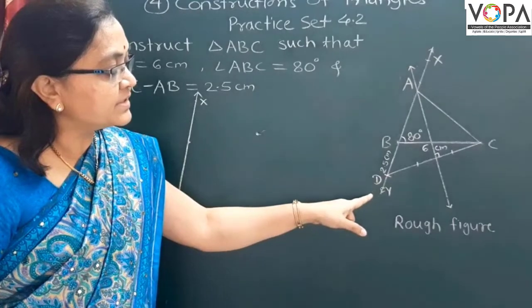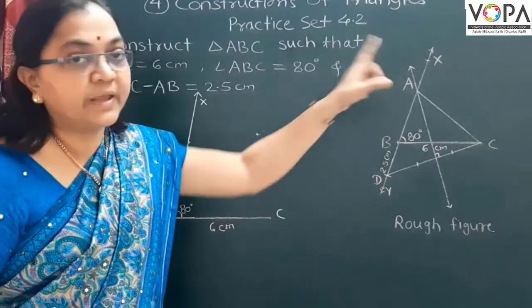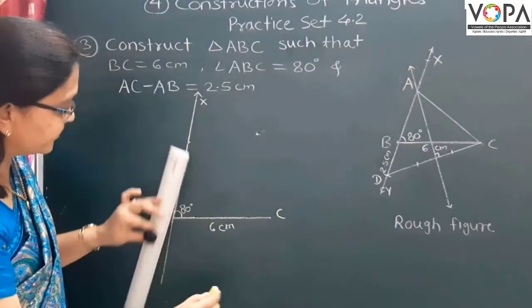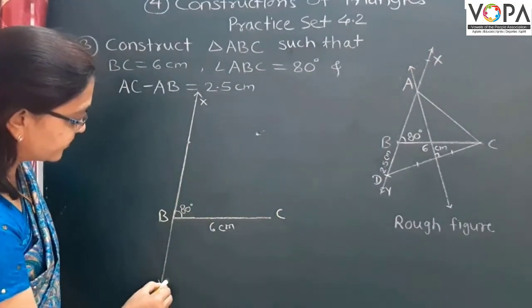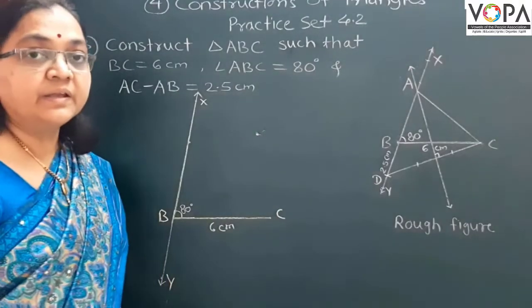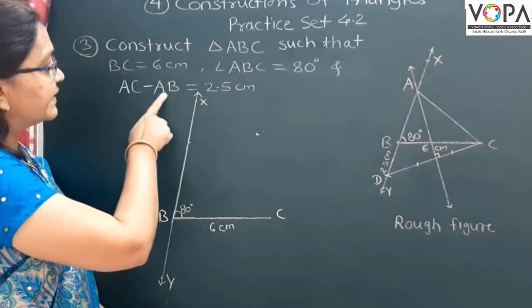Here, we should draw this opposite ray BY of the ray BX. This one is the ray BY. Then, in your compass, take distance equal to AC minus AB.